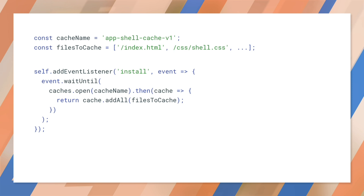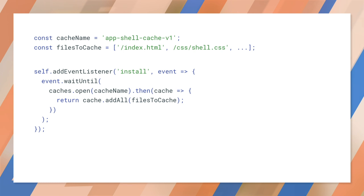If an older version is running, it'll be left intact. caches.open and caches.addAll return promises. If any of the resources fail to fetch, the caches.addAll call rejects. We're using the word 'shell' here to refer to core resources used by your app.